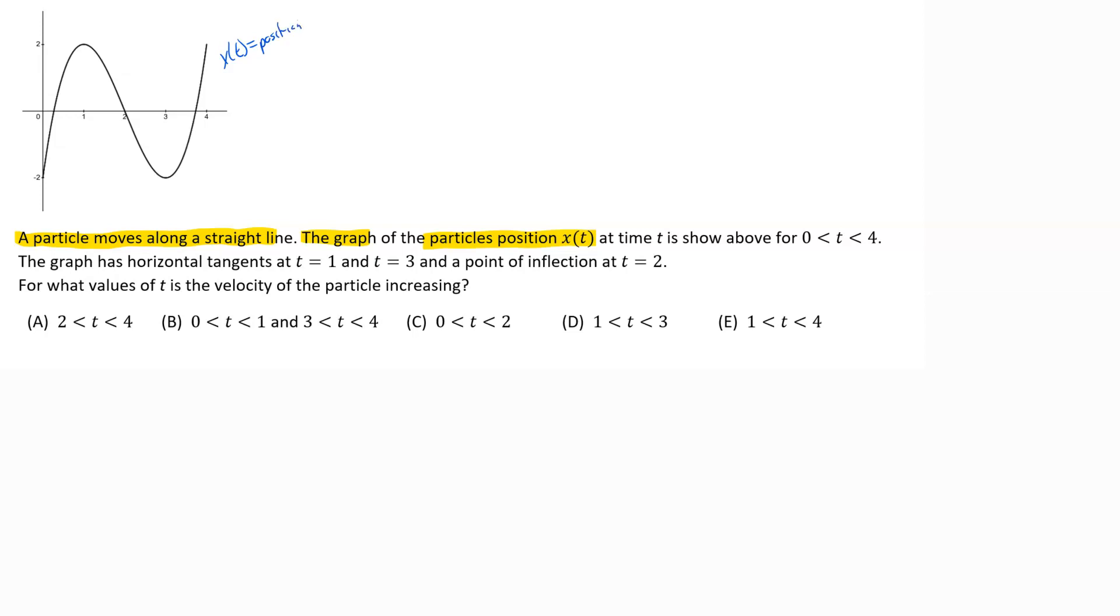I'll write it up there that is the position function. From there they tell us some info about it - you've got horizontal tangent lines at t equals 1 and t equals 3, and so I'm going to mark those on there.